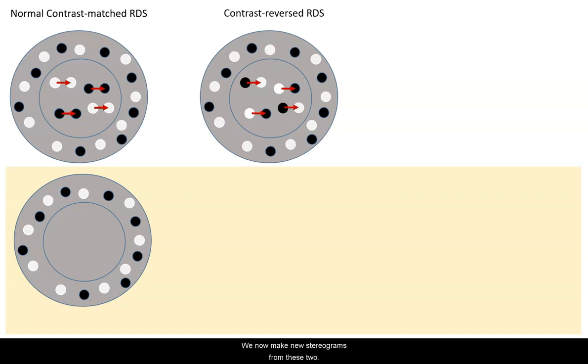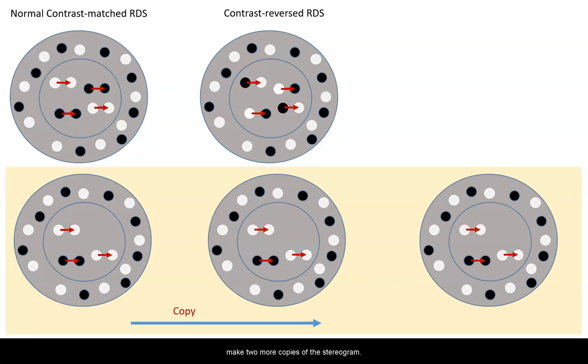We now make new stereograms from these two. Start with only homo pairs. Make two more copies of the stereogram.